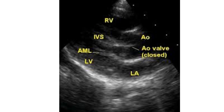Parasternal long axis view in Tetralogy of Fallot: diastolic frame showing the aortic valve in closed position and mitral valve in open position. The aortic valve appears to impinge on the ventricular septum, but the ventricular septal defect with aortic override and connection between the right ventricle and aorta is evident just above the septum.